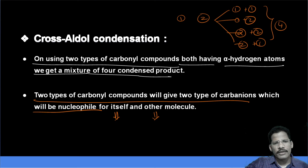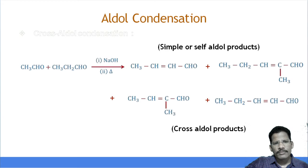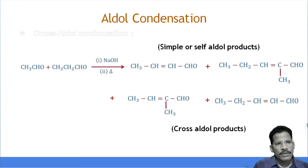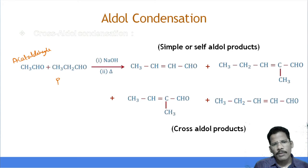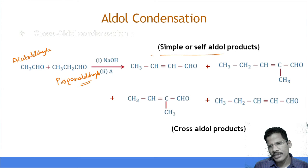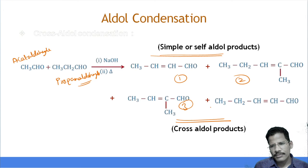Looking at another cross-aldol example: acetaldehyde molecule and propanal molecule — both are different aldehydes. Finally, you will get a mixture of products. This is a mixture of products formed in cross-aldol condensation.